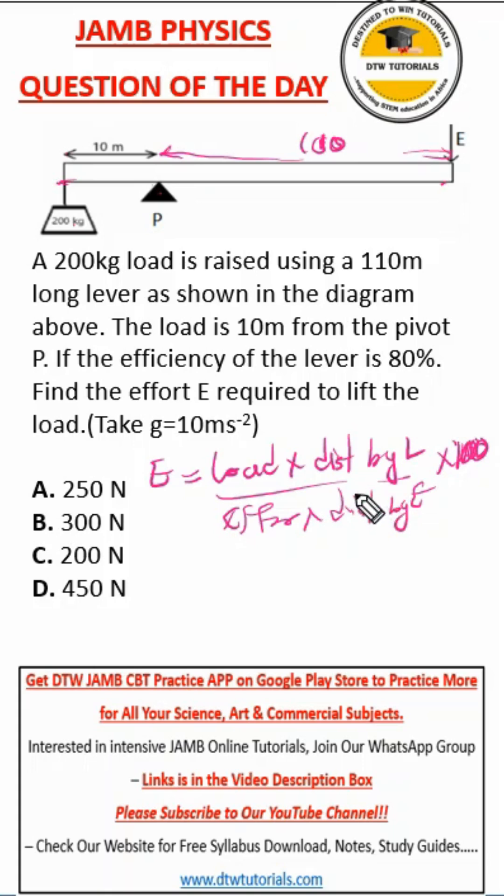Work output is the load part, that's the output. Work input is the effort part, the efforts that the person uses. That is what your effort times your distance. I can't write too much here because of the space, but always know this.